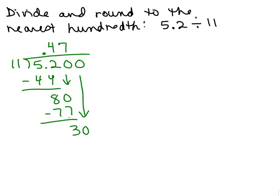And then we have 11 into 30 goes 2 times. So the question is, what does it round to? Since the thousandth place is a 2, if it's 0 through 4, we don't round up. We keep as is.